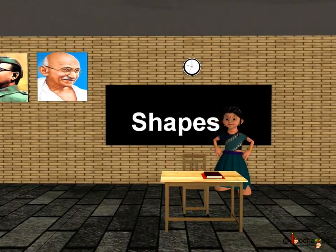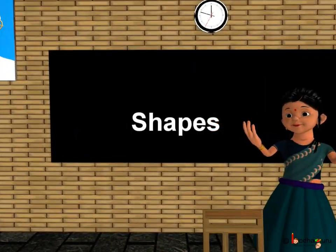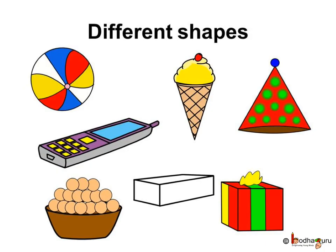Good morning children. Today we shall learn about shapes. We see so many things around. Do they look same? No. Even though they may be of same color, they look different due to different shapes.